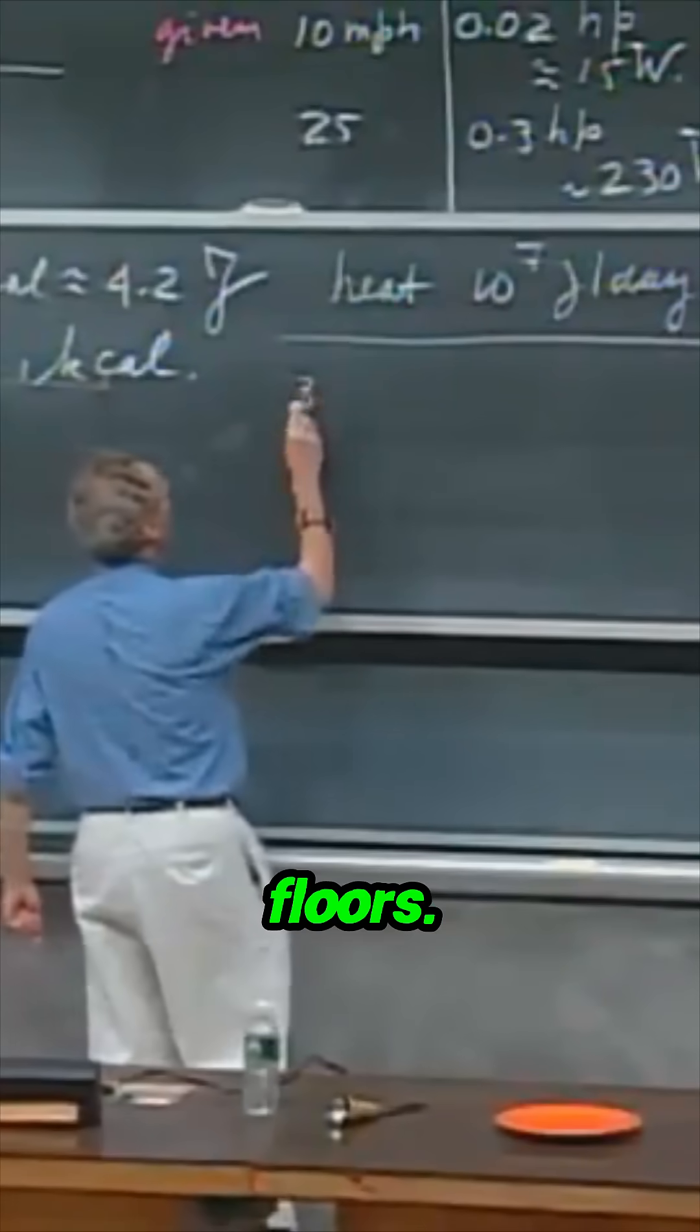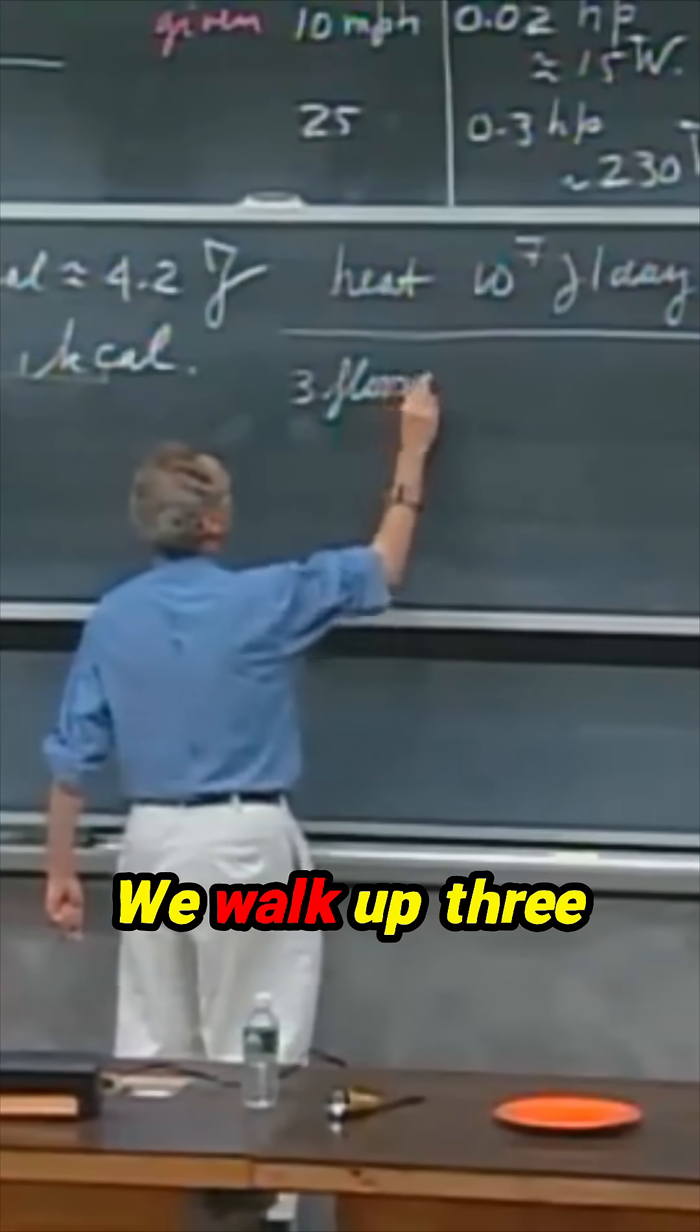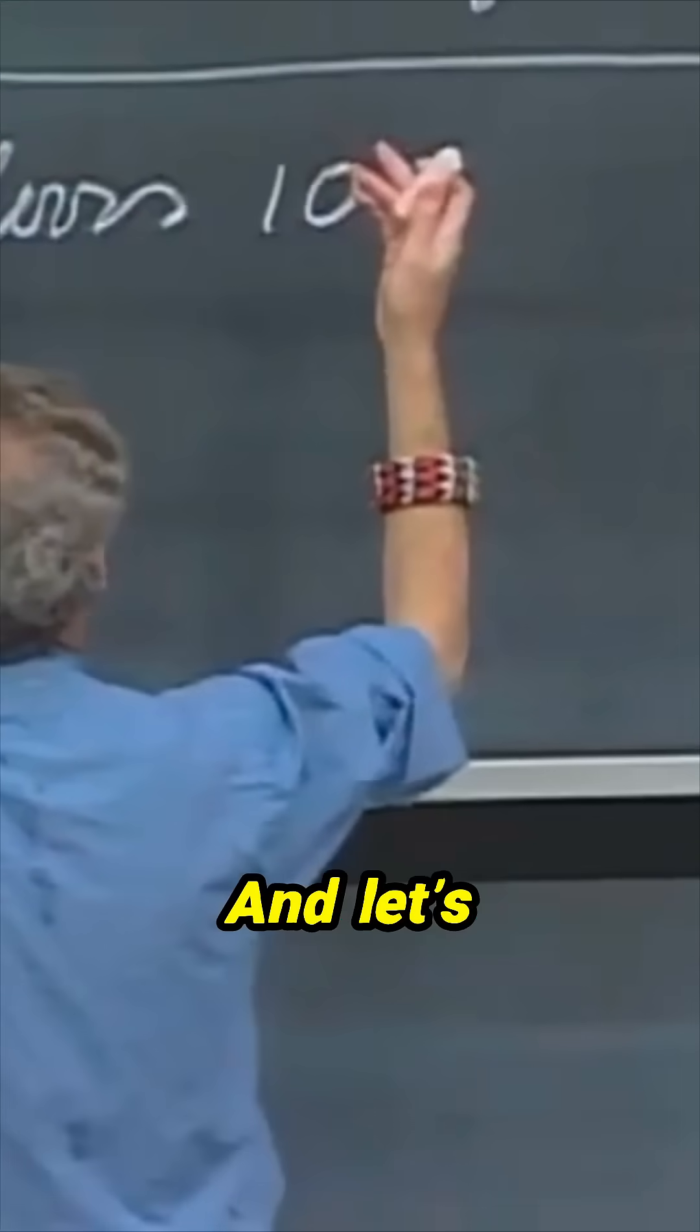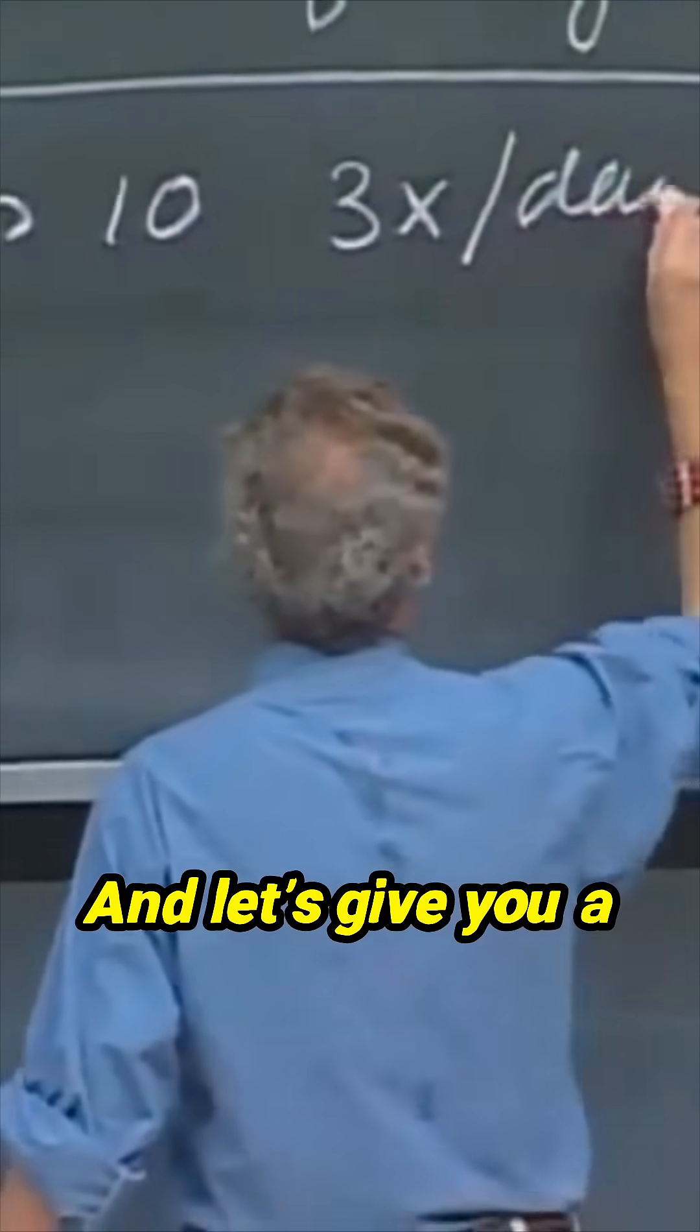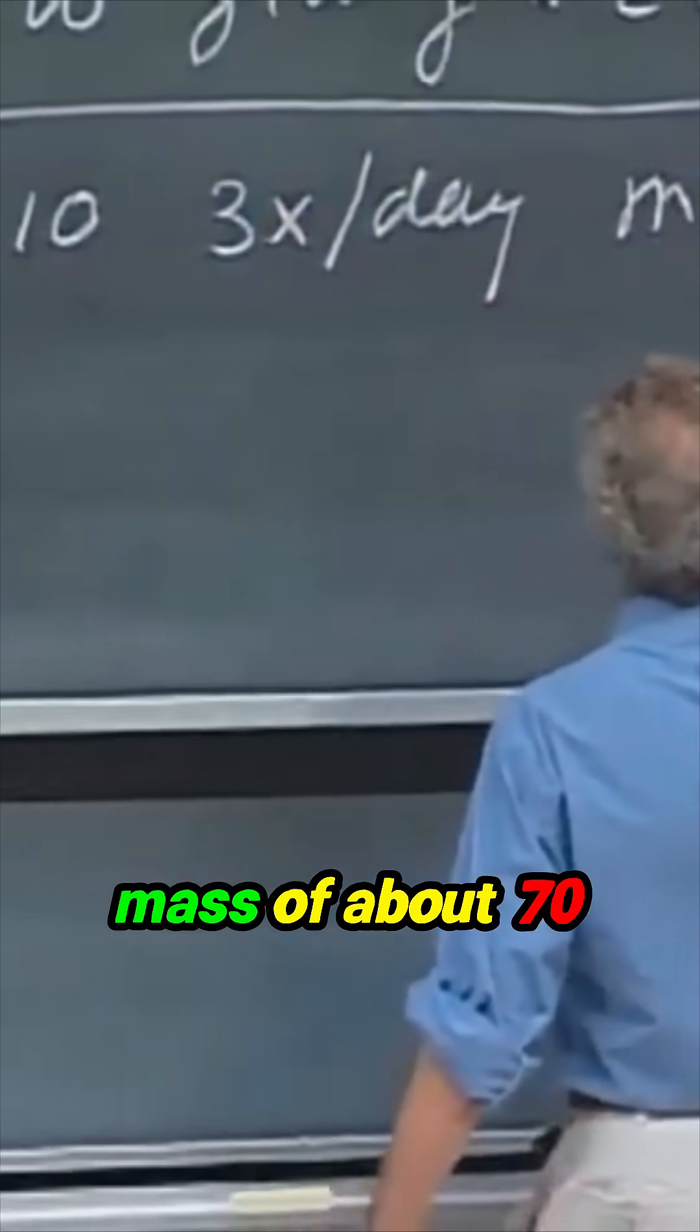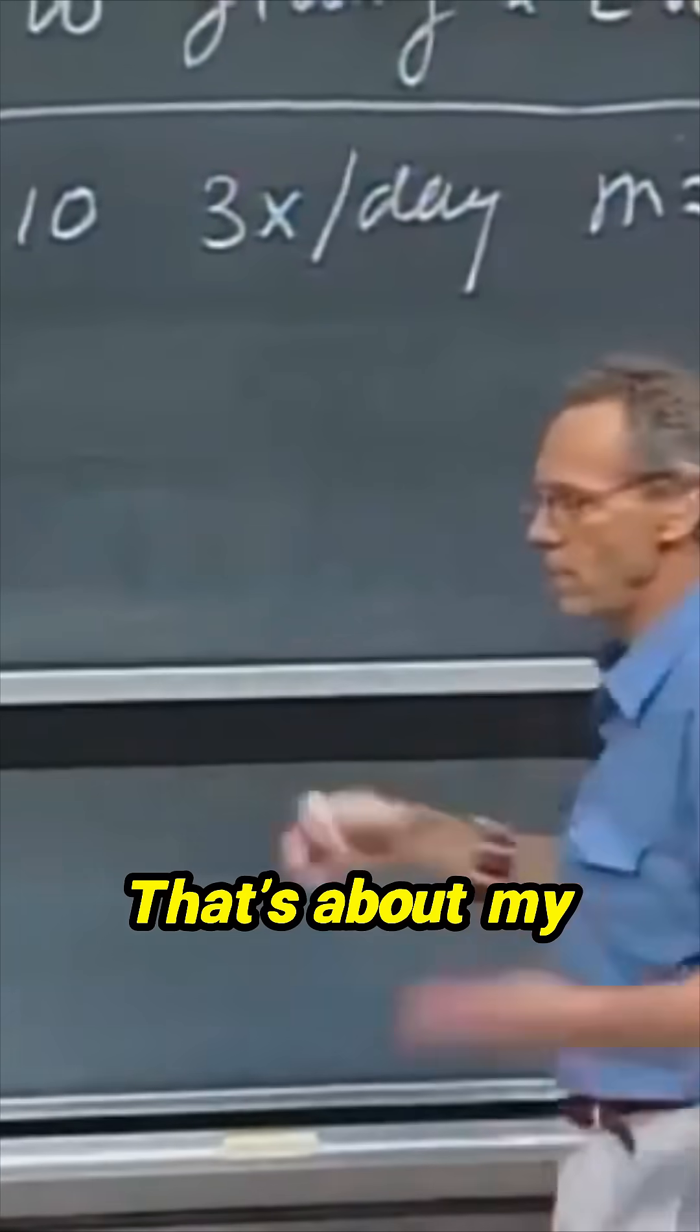Suppose we go up three floors. We walk up three floors, which is about ten meters high. And let's say we do that three times per day. And let's give you a mass of about 70 kilograms. It's about my mass. How much work do I do when I do that?